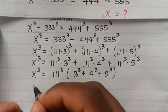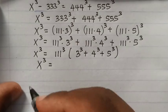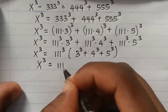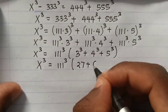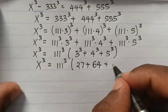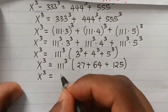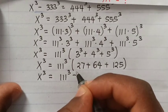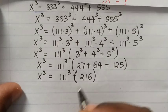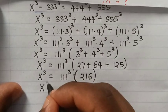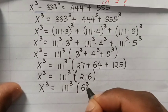Then x³ equals 111³ times (27 + 64 + 125). Adding these up gives 216. Then x³ equals 111³ times 216, and 216 is 6³.